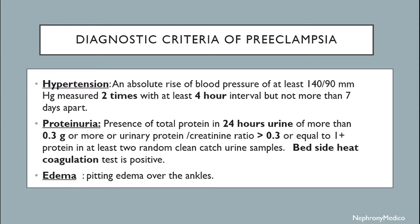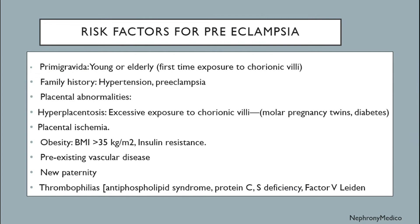Proteinuria: presence of total protein in 24-hour urine of more than 0.3 gram, or urinary protein-to-creatinine ratio more than 0.3, or equal to 1+ protein in at least two random clean-catch urine samples. Bedside heat coagulation test is positive. Edema: pitting edema over the ankles.